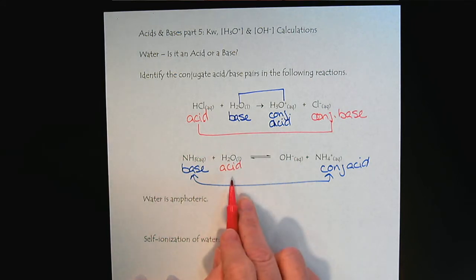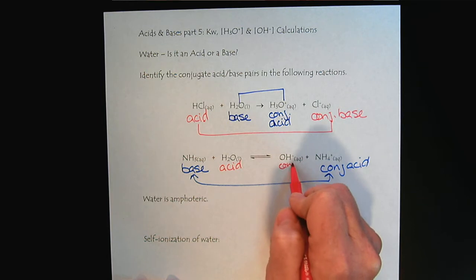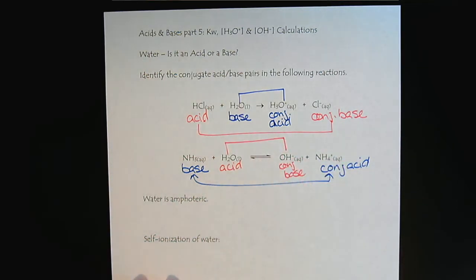And so then that means the hydroxide would be the conjugate base. So there is our second conjugate acid-base pair.